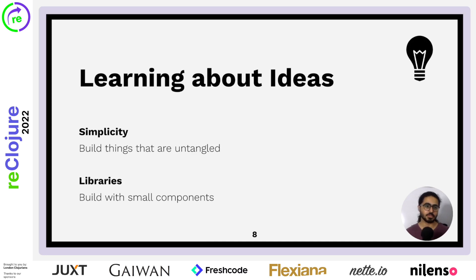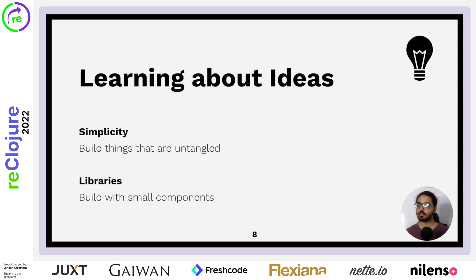So there were ideas that I learned about Clojure from the Rich Hickey talks. One of them is simplicity — that building things that are untangled is a good way to build robust software and make that software easier to reason about, because if you have many components, you can reason about each of them individually. Ideas about libraries, how we can build with those small components, and we can grab those components from many, many libraries. And thank you, library devs — you made Clojure awesome.